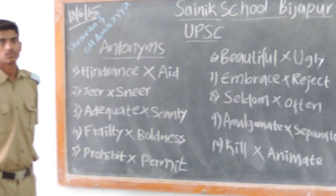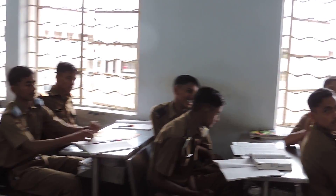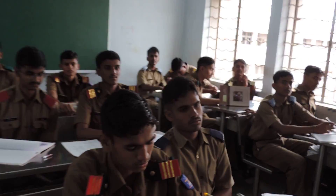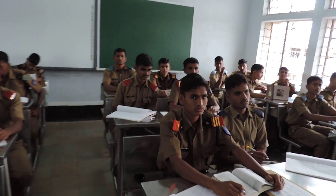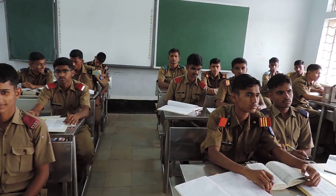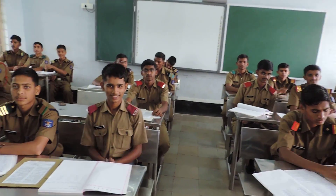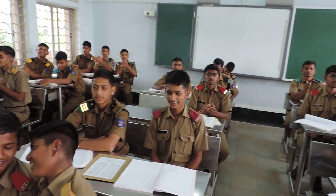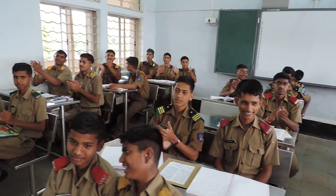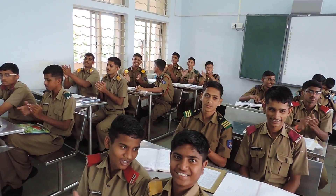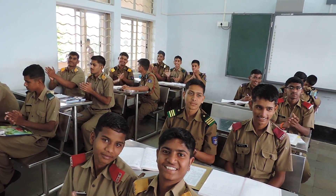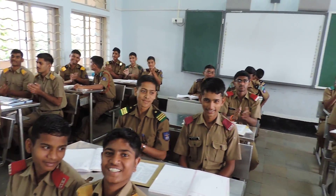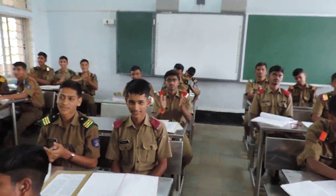The first one is opposite — number one is A. The second one is J and its opposite is A. The third one is adequate and the opposite is scanty. The fourth one is frantic and the opposite is goodness. The fifth one is co-event and the opposite is permit.